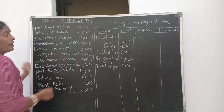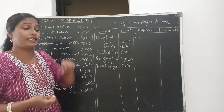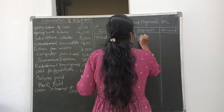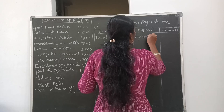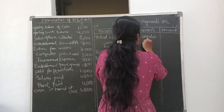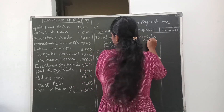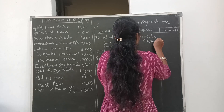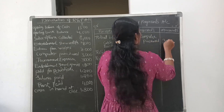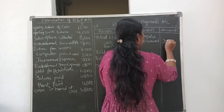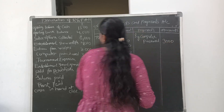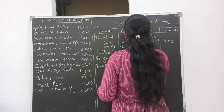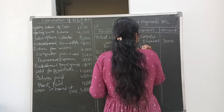Computer purchased — 'purchased' means cash is going out of the business, so that is a payment. We write 'computer' on the payment side. The amount of computer purchased is 3000. Next, tournament expenses — expenditure is a payment, so we write tournament expenses on the credit side.